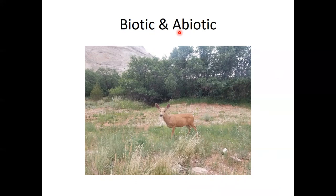Let's take a moment to look at the picture and give some examples of living things. The most obvious living thing is the deer pictured in the middle. The deer is also standing on a living thing — the grass — and in front of the trees. Non-living things would be the large rock, the sky, the air that the deer is breathing, and even though we can't see it, the sunlight shining down. Take a moment to find any other biotic or abiotic things in the picture.